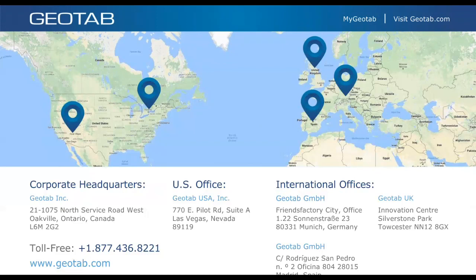Personal conveyance distance is not mandated by FMCSA in the U.S. — it's completely up to the carrier. In Canada, it's 75 kilometers. However, DOT officers will know how far the driver traveled in personal conveyance during an audit, so it's better to set something realistic rather than something close to unlimited.